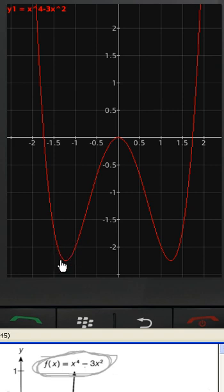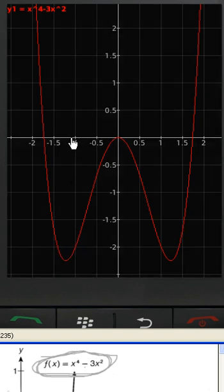I can now definitely see that there's a local minimum somewhere around x equals negative 1 and a quarter, y is approximately negative 2 and a quarter. It looks like there's a local maximum right here at the origin. Another local minimum over here at x equals 1.25 and y equals negative 2.25.